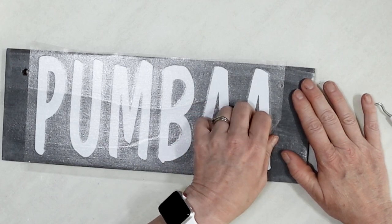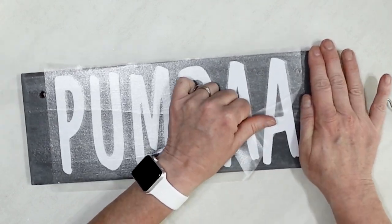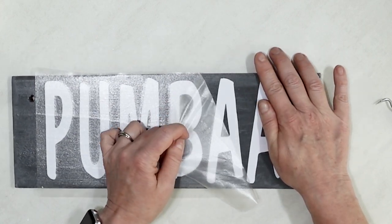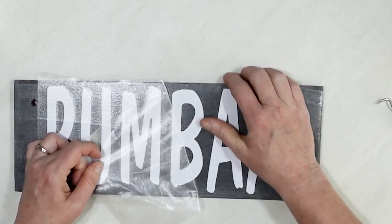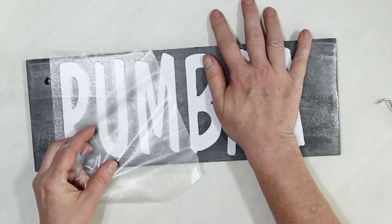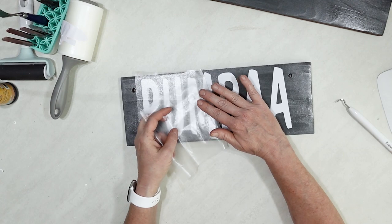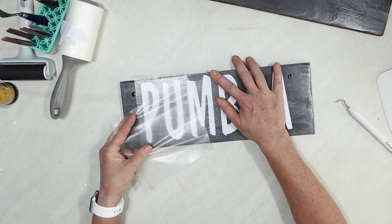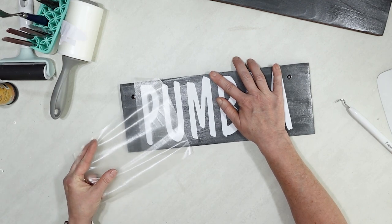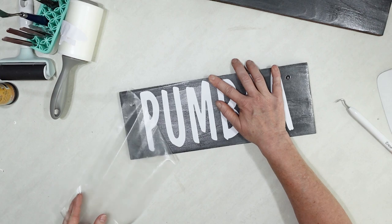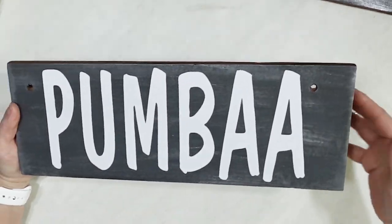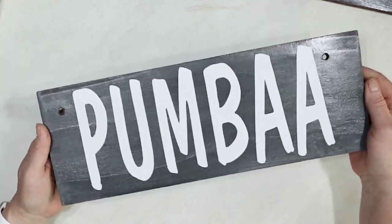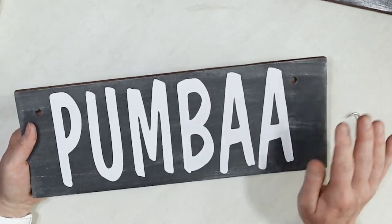Then you just peel the backing away. Just like that I have created a nameplate for my horse's stall. Isn't that adorable? Pumbaa is done, I don't have to seal it or anything, I've already done that part. And now it's time for Timon's.